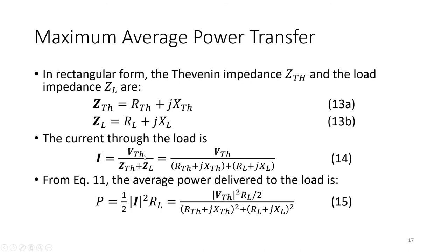Putting these values from equations 13A and 13B, we reach the current value. To get the average power, we use the relationship from the previous lecture: one-half times the square of the phasor current magnitude times RL. The value of average power is given by this equation, where we substitute I from equation 14.